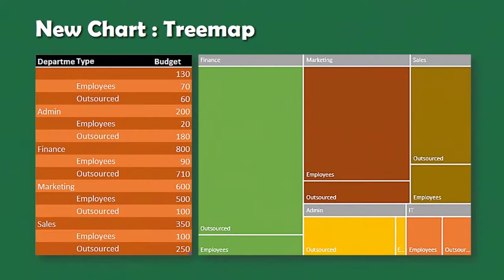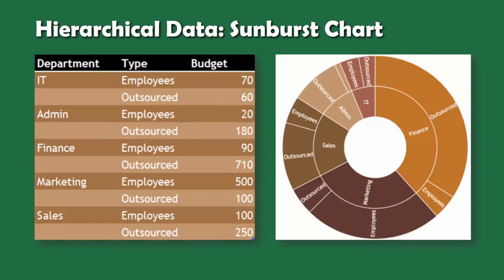There is also a new chart called Treemap, which is very useful for visualizing hierarchical data. Another similar chart that has been added is called the Sunburst chart.